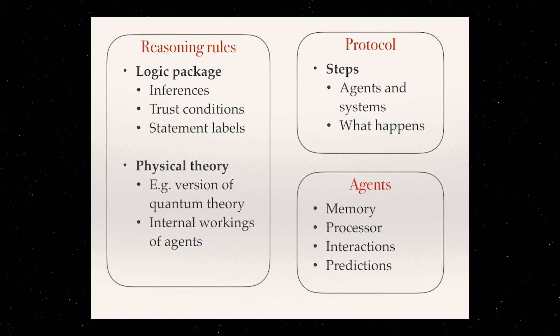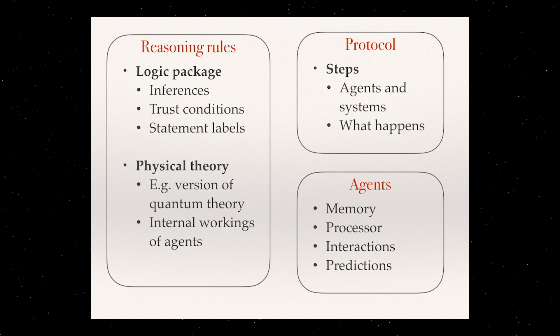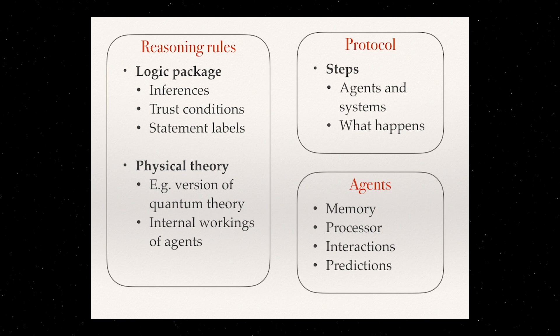Then, of course, we need to instantiate this class, which are the agents. Each agent will tell us what's the size of their memory, what's the processor they use, what kind of interactions model these measurements, and what kind of predictions they can make. So this is what we're doing, and so far we've tested it in the Frauchiger-Renner experiment.